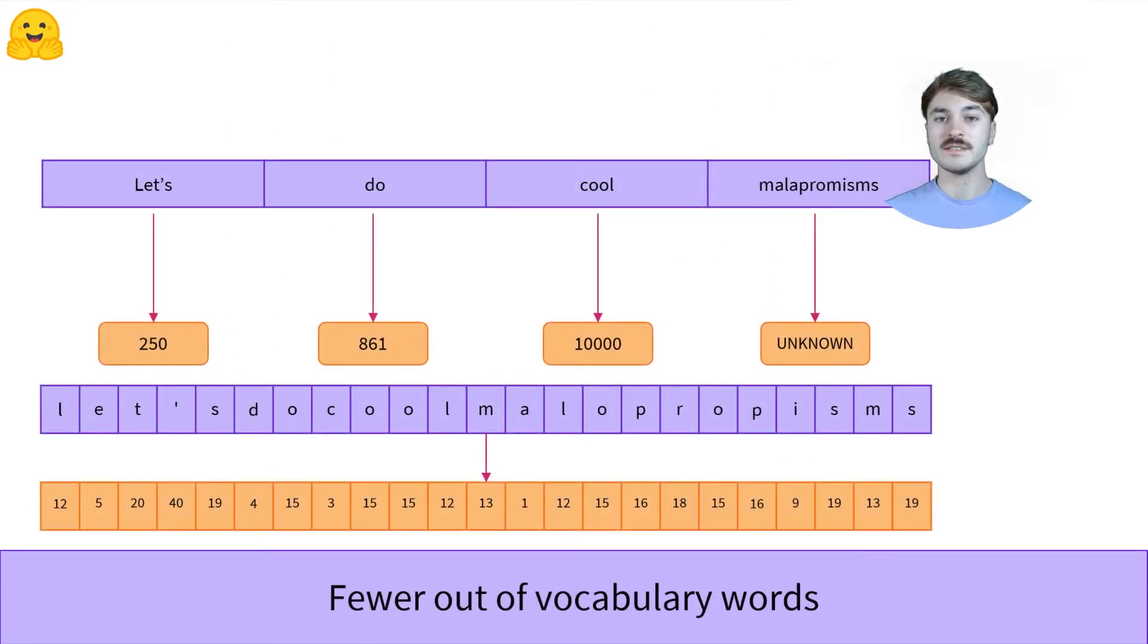These vocabularies are also more complete than their word-based counterparts. As our vocabulary contains all characters used in a language, even words unseen during the tokenizer training can still be tokenized.